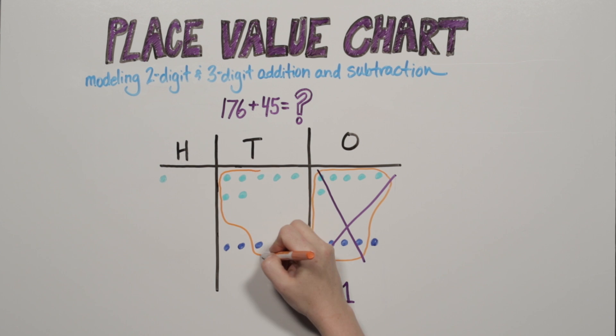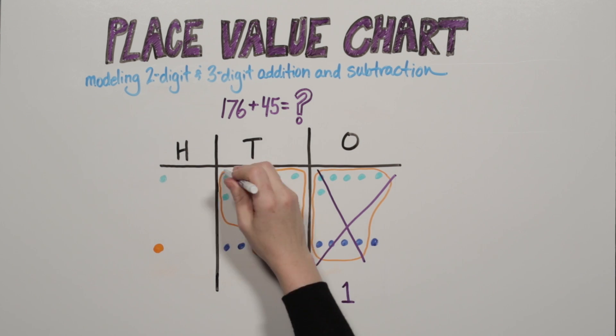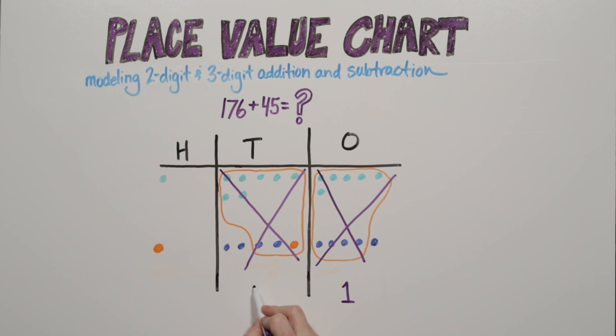A bundle of 10 tens make 100. How many tens are left? 2.